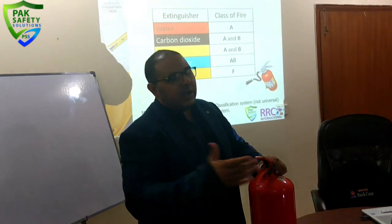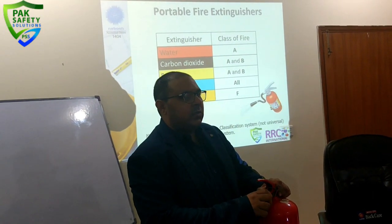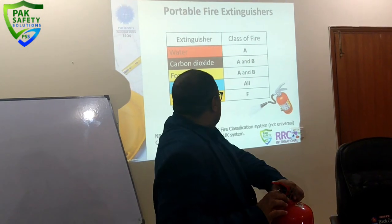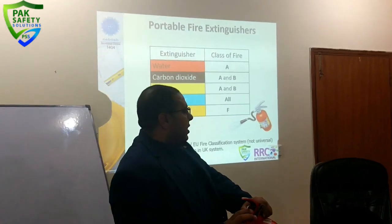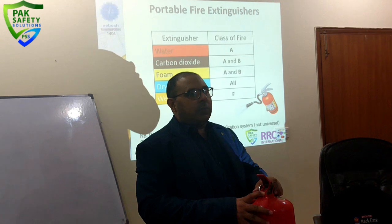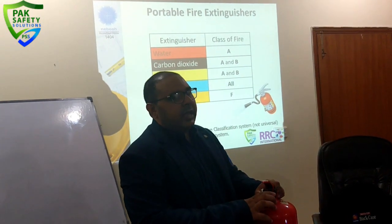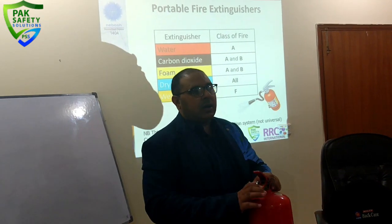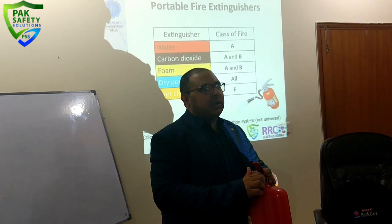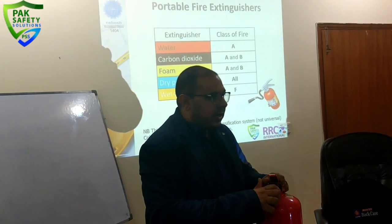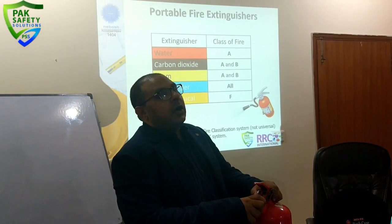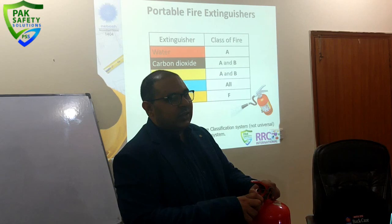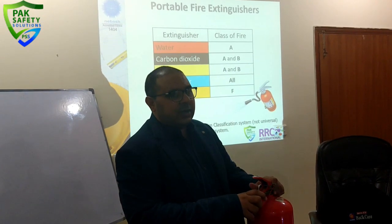A fire blanket is also available apart from fire extinguishers, for smothering purposes and to cover a fire. Wet chemical extinguisher is only for kitchen fires and should not be used anywhere else. Wet chemical, water type, and foam type should not be used on electrical equipment. All other fire extinguishers should also not be used on kitchen fires — wet chemical should be used in that case.